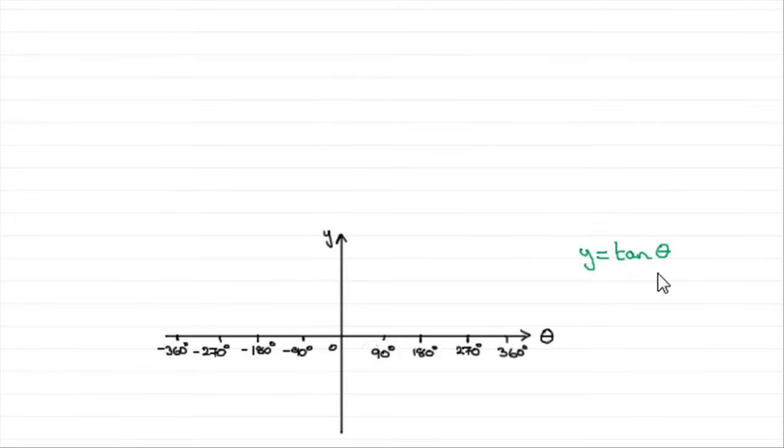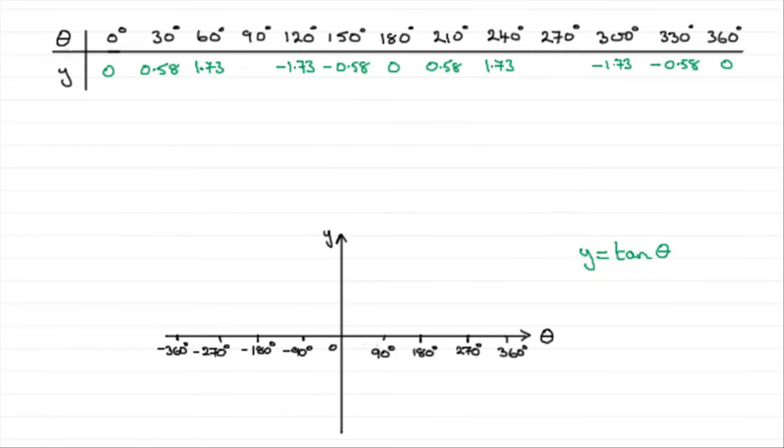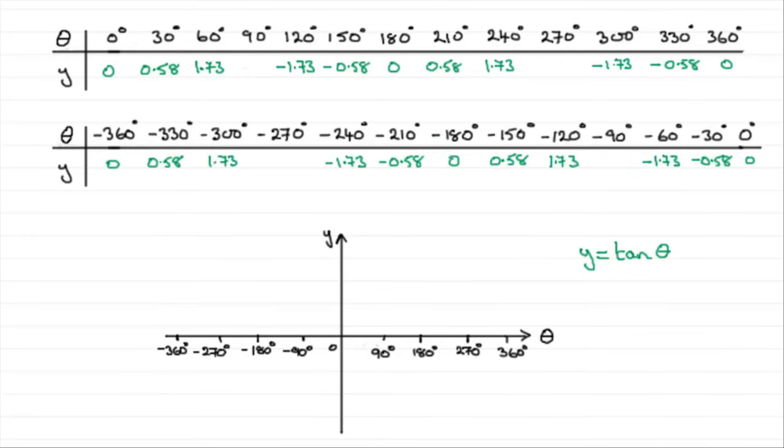We only have one more graph left to do, y equals tan theta. This is an interesting graph. It's totally different from sine theta and cos theta. I've got some axes here going from minus 360 to 360 degrees. If we wanted to plot this graph, draw up a table and use your calculator to work out various values. I've got a table here going from 0 degrees to 360 degrees. If you type in tan of 0 degrees you'll get 0, tan of 30 is 0.58 to 2 decimal places, and so on. Do the same for going from minus 360 degrees up to 0. Type in your values, build up a table.